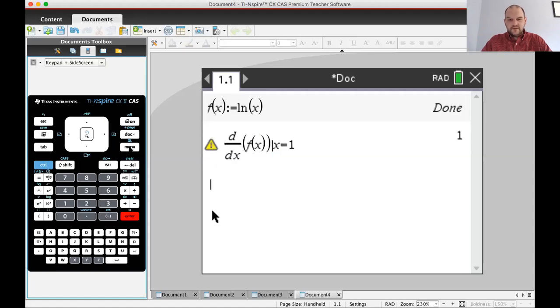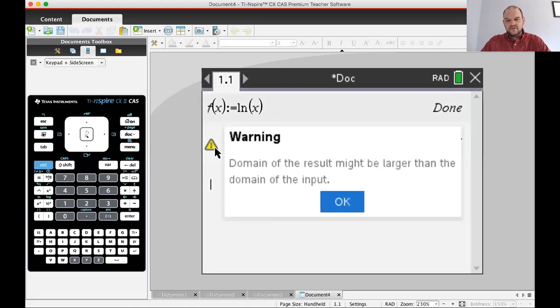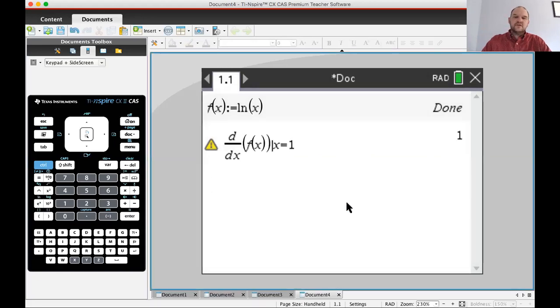The calculator will find the derivative at one. It's going to give you a warning in this particular case—it doesn't always give you a warning. Here it's going to say the domain of the result might be larger than the domain of the original. Yes, that's actually true in this case. We'll talk about why in a second.